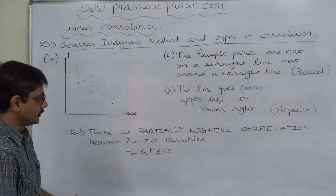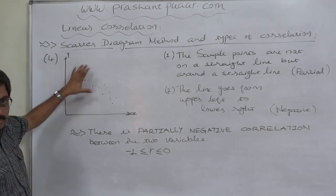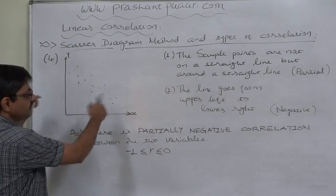Our observation. Number one: all the sample points are not on a straight line but are around a straight line.